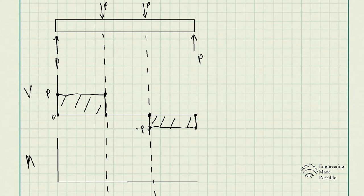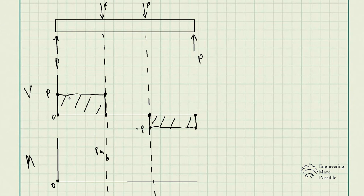This shear diagram shows within which locations of the beam we have shear and the magnitude. The maximum shear force is either positive P or negative P; the sign denotes direction — upward or downward. We can also directly use the shear equations we developed and graph them. Keep the negative sign for the third segment to avoid confusion when drawing the diagram.